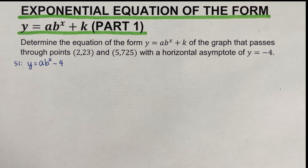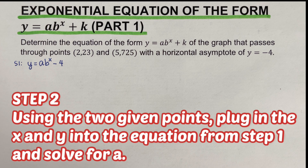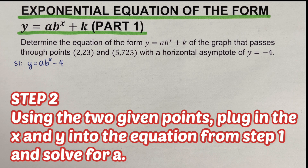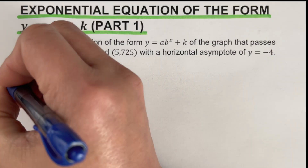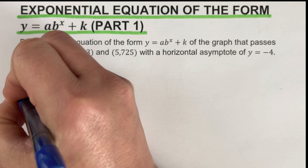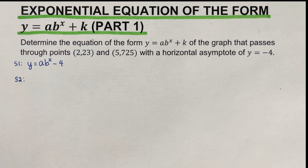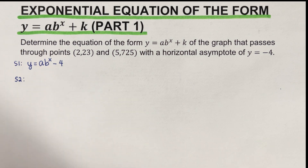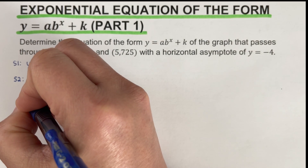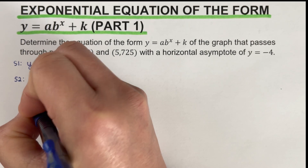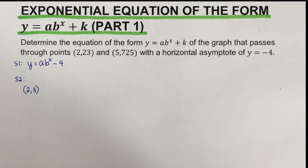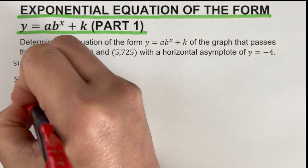Step 2: using the two given points, plug the values of x and y into the equation from step one and solve for a. We use the first point (2, 23). We will plug x equals 2 and y equals 23 into the equation.